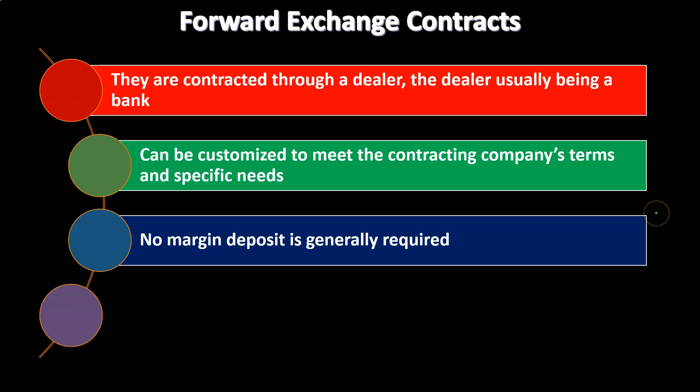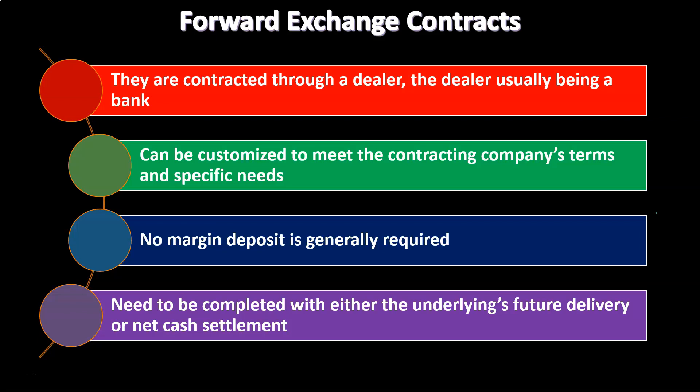No margin deposit is generally required. When working with the bank, you're basically putting a receivable and a payable on the books at this point in time based on what you think the future value will be. Typically there's no deposit at that point because no money is exchanging hands — it's just a speculative arrangement with the bank. At the end of the time period, they'll settle it. That means you would either receive foreign currency from the bank or pay foreign currency, and receive or pay the dollars at the end of the time period.